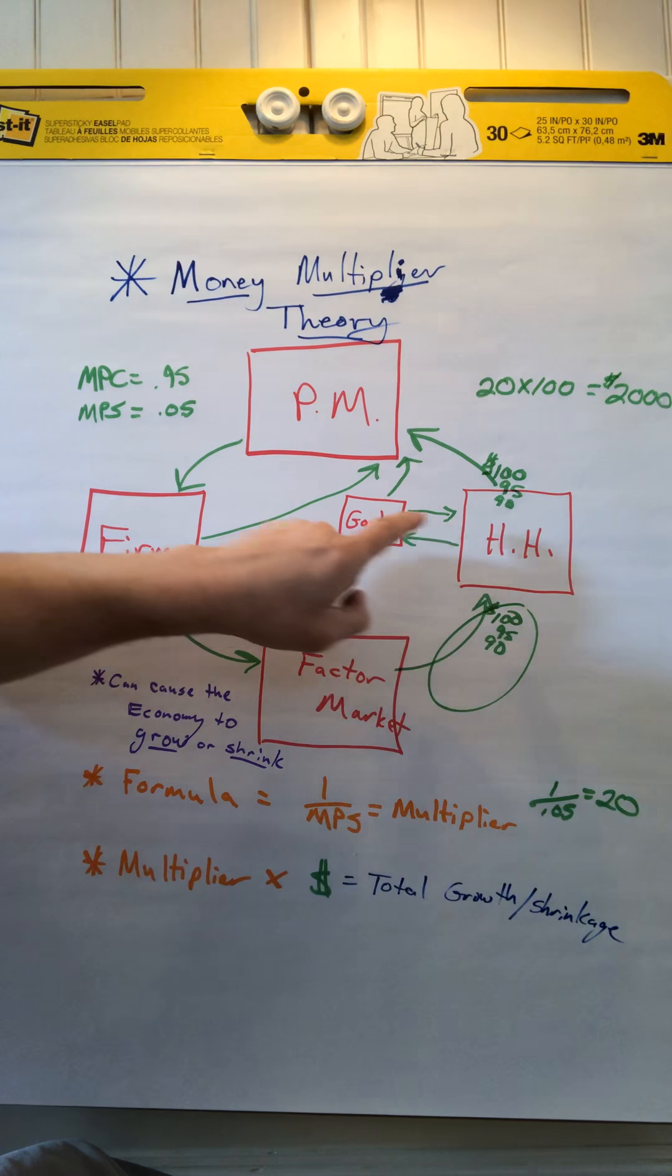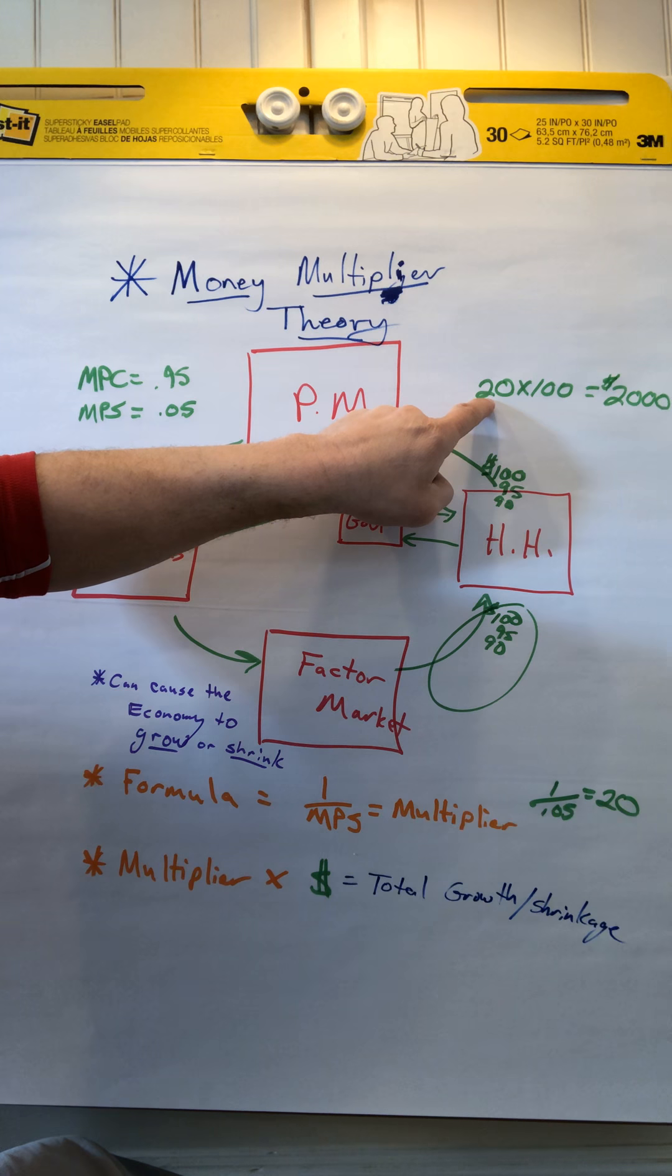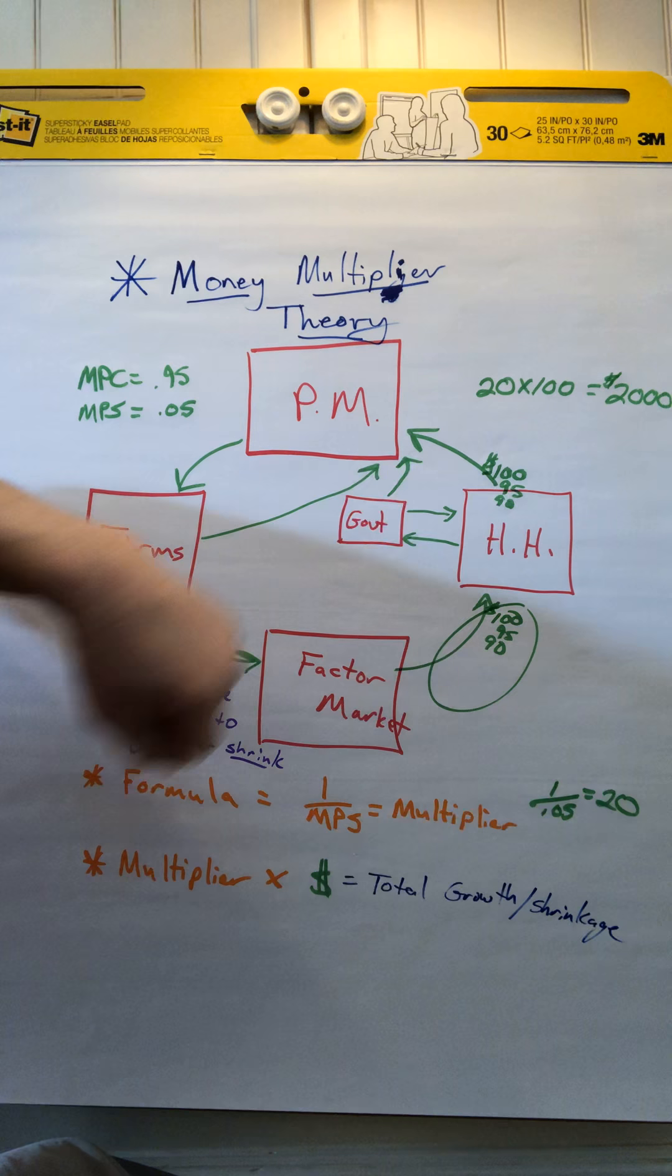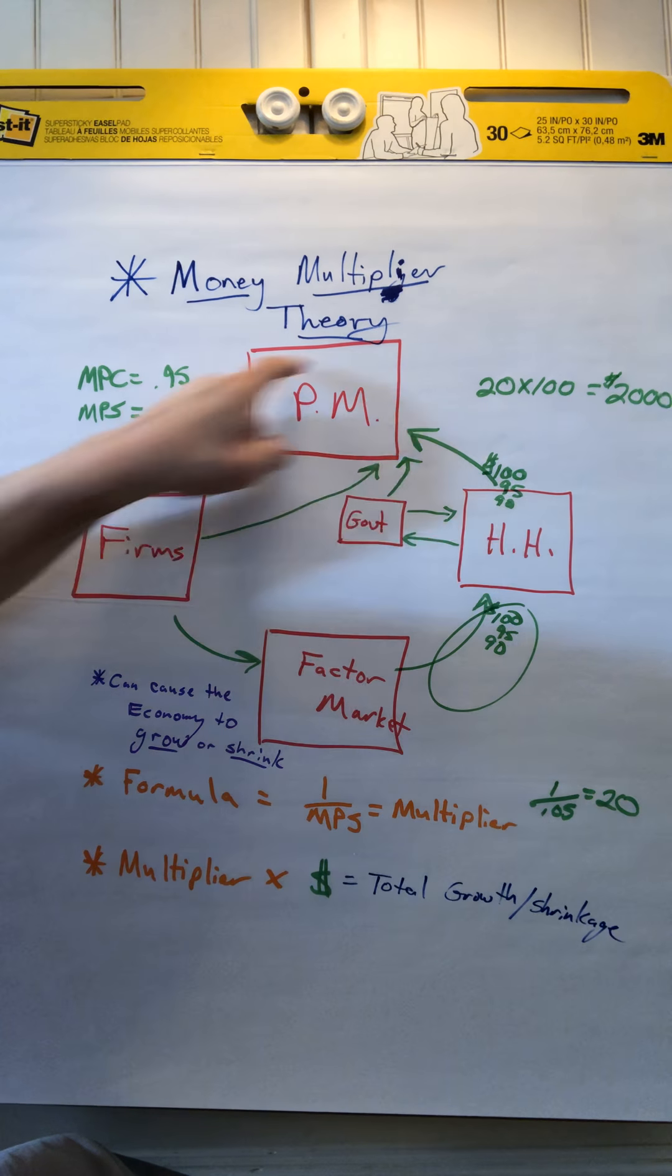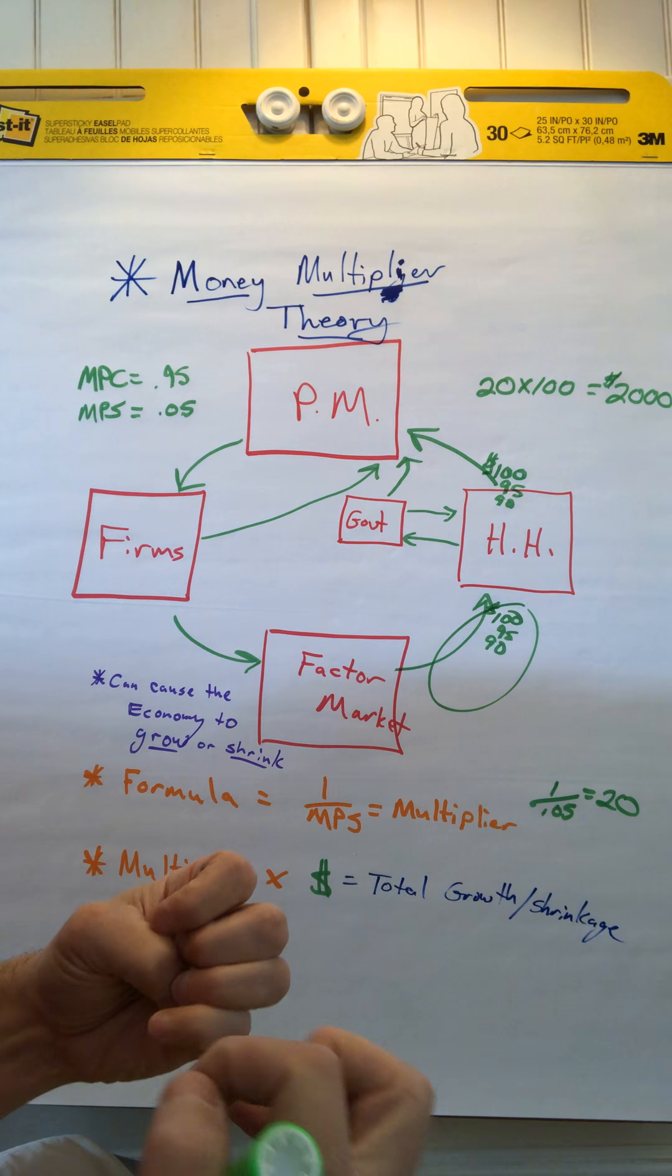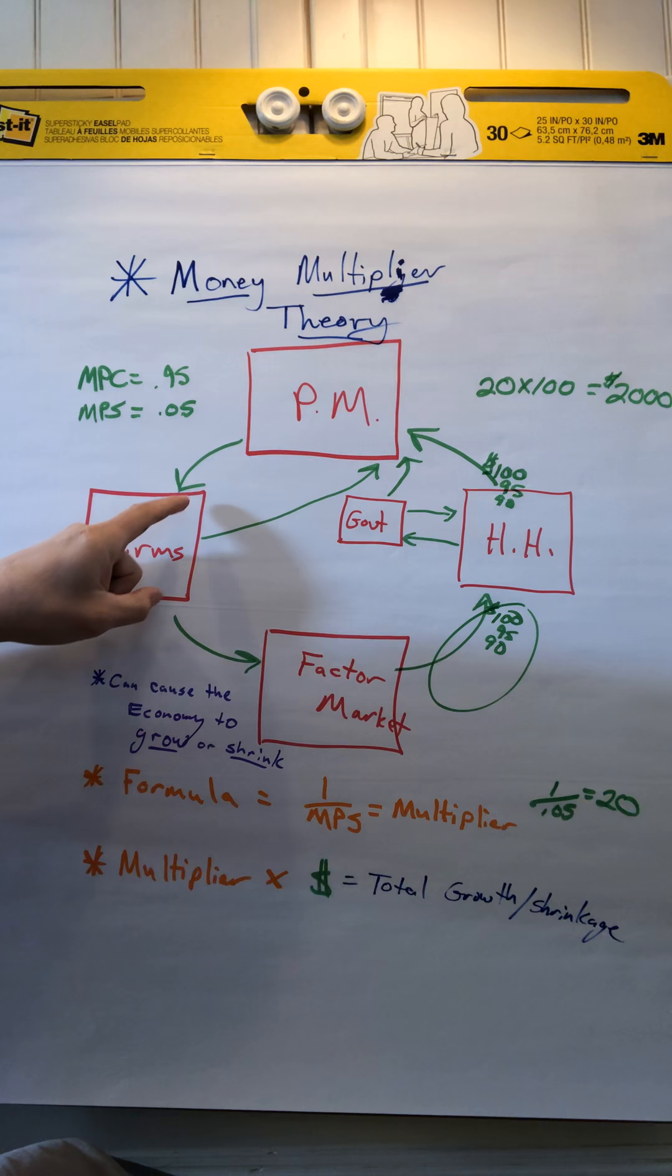You have households, you have the government. If the government spends $100, you times it by the multiplier, and then of course it would generate how much money would grow based off government spending. And right now our government is already talking about a stimulus package where they're going to spend money to try to help our economy grow and remain intact or that it doesn't get hurt too much based off what's going on. And then the last one is you have firms. Firms can spend money.